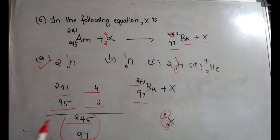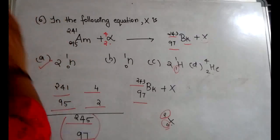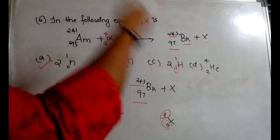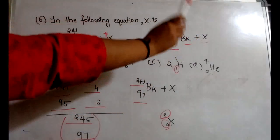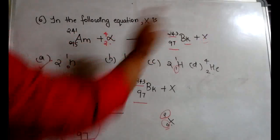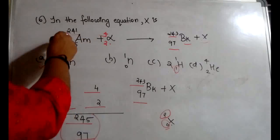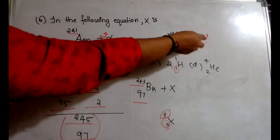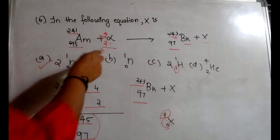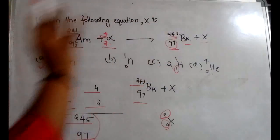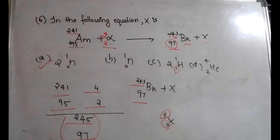Options A and C both have mass number 2, but option C also has atomic number 1, which we don't need. Species X must be a neutron with no atomic number. Therefore X is two neutrons, and the answer is option A. To summarize: calculate the sum of mass and atomic numbers on both sides, then determine the missing species accordingly.